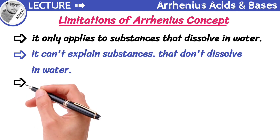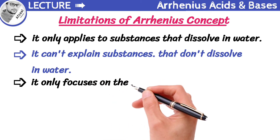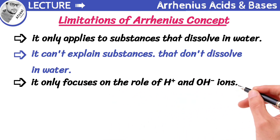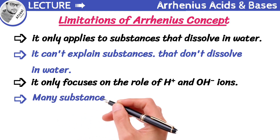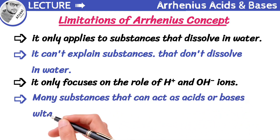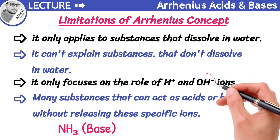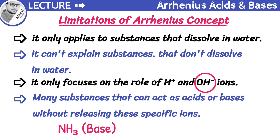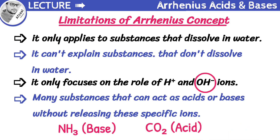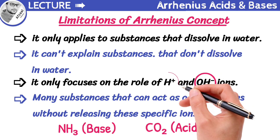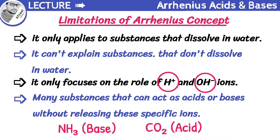Another limitation is that it only focuses on the role of hydrogen ions and hydroxide ions. However, there are many other substances that can act as acids or bases without releasing these specific ions. For example, ammonia is a base, but according to Arrhenius, it should release hydroxide ions — however, ammonia doesn't contain hydroxide ions. Similarly, carbon dioxide is an acid, but according to Arrhenius, it should release hydrogen ions — however, carbon dioxide doesn't contain hydrogen ions. So the Arrhenius concept is not able to explain these substances as acids and bases.